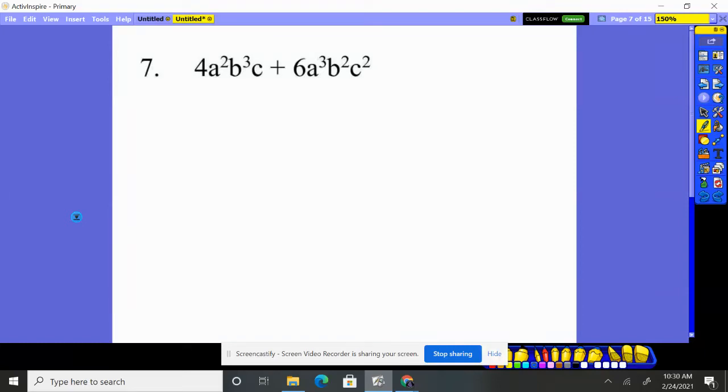Number seven, we have a whole lot of variables here. If we break it down, for four and six we can see a two is going to factor out. We're just going to break it down into its prime factorization. It's a two, two for four. A times A, B, B, B, C.